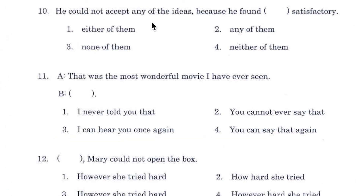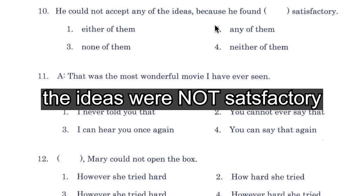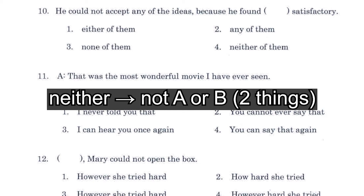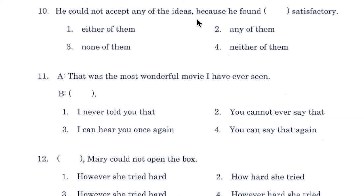Number 10. 'He could not accept any of the ideas, because he found either of them / any of them / none of them / neither of them satisfactory.' Number 3, 'none of them'. Options 1 and 2 are eliminated because we need a negative word. 'Neither' can only be used for two ideas, but the main clause says 'any of the ideas', implying at least three. When dealing with more than two objects, you use 'none'.